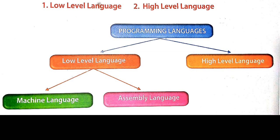Low-level language is divided into two types: machine language and assembly language. Machine language is the language which only the computer can understand. It consists of 0s and 1s — binary codes. The second type is assembly language. It is also a low-level language, but it is a user-friendly language. It is translated to machine language by software called an assembler.